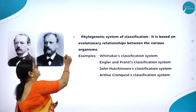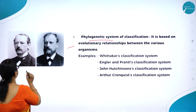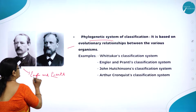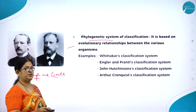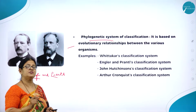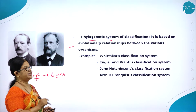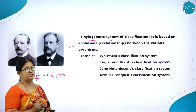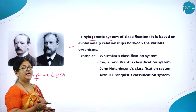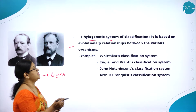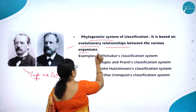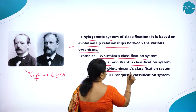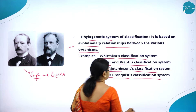Moving on to the phylogenetic system of classification — here you can see these two scientists: Adolf Engler and Prantl. These two scientists contributed the phylogenetic system of classification, which we are following right now. Why is this system accepted and not the other two? Because it considered the evolutionary relationship for classifying plants. Examples include Vitakka's classification, Engler and Prantl's system, John Hutchinson's, and Arthur Cronquist's classification systems.